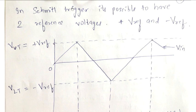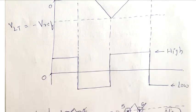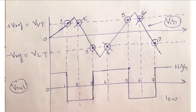In a Schmitt trigger, it's possible to have two reference voltages. In a comparator, we had only one reference voltage, called V reference. The name itself tells you that this reference voltage would be on the positive side of the x-axis, and minus V reference would be on the negative side of the x-axis. I skipped those two waveforms and will show you these waveforms directly.